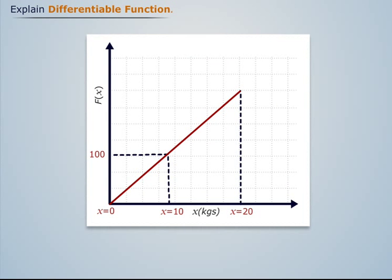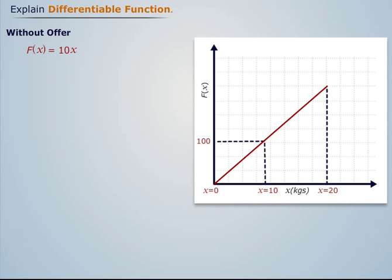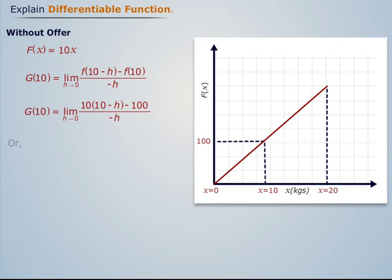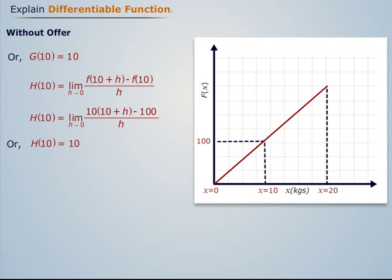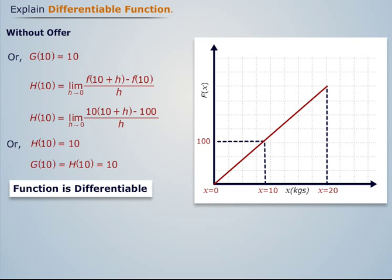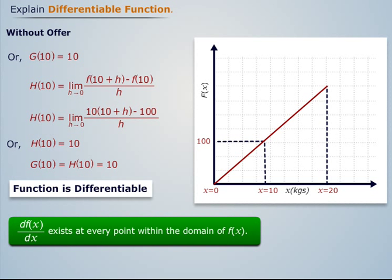To check the differentiability of the no-offer function at x equal to 10, we calculate g(10) and h(10). First, calculating g(10), we can also write the expression in simplified form. Then calculating h(10), we can also write that expression in simplified form. We see that g(10) is equal to h(10), therefore the function is differentiable in nature and its derivative exists at every point within its domain.